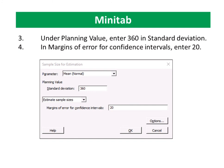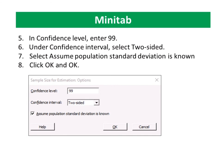In Margins of Error for Confidence Intervals, enter 20. In Confidence Level, enter 99. Under Confidence Interval, select Two-Sided.